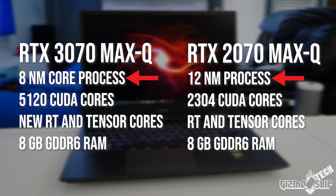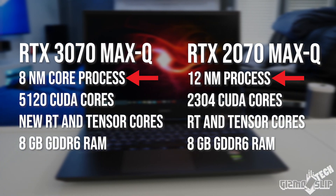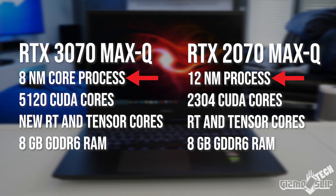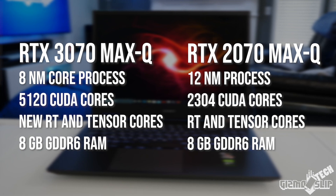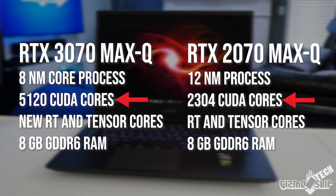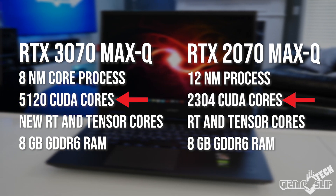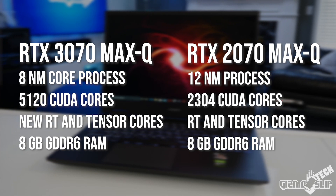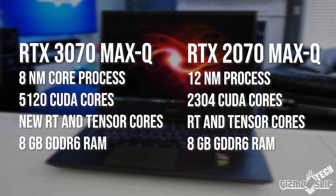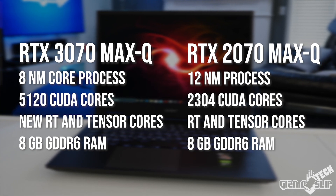When we compare the RTX 3070 versus the 2070, we see an 8-nanometer core process versus 12-nanometer, again more than double the CUDA cores at 5,120 versus 2,304, improved ray tracing and Tensor cores, and 8 gigs of RAM versus 8 gigs of RAM — so no difference there. Assuming these specs are correct, we should see a notable gain in performance, but how much is the giant question mark.